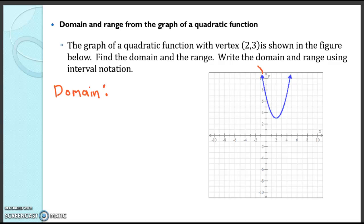Now this piece continues infinitely in both directions. So no matter how negative we go we're still going to have our function. So our domain is going to go from negative infinity to infinity. And then our range.